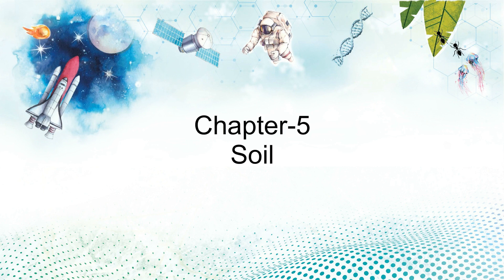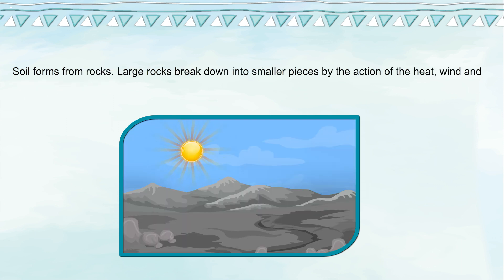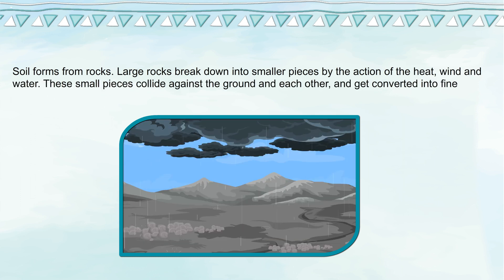Chapter 5: Soil. Soil forms the topmost layer of the earth's surface which contains water, minerals and gas and provides the basis of life. Soil forms from rocks. Large rocks break down into smaller pieces by the action of heat, wind and water.